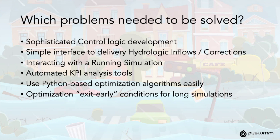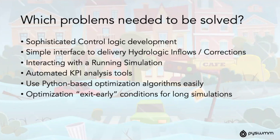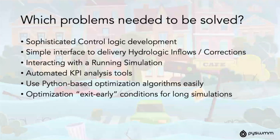We were looking for a means to have a simple interface to develop and deliver hydrologic inflows and also correct inflows into the model. We worked a lot with machine learning, creating neural network representations of hydrology. Being able to interact with a running simulation makes sense for any coupling environment, and then automated KPI tools. We did a lot of work using evolutionary algorithms, tons of optimization. When you're running 100,000 models, it's really nice if a model diverges so far that we can just exit early and free up that compute.